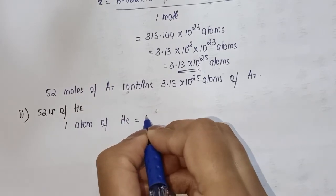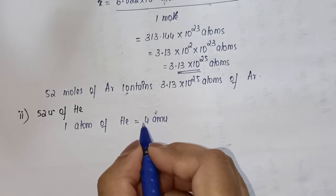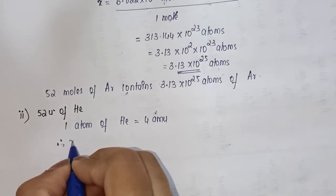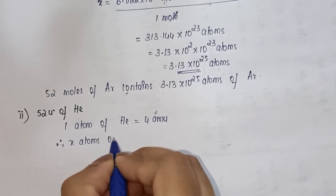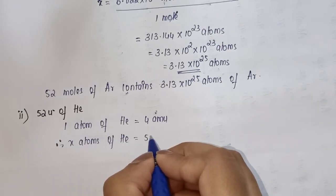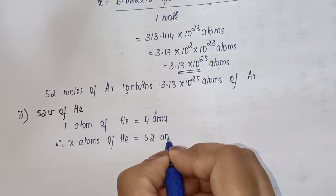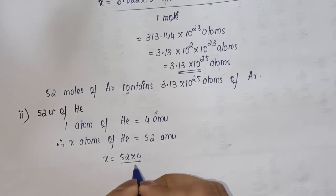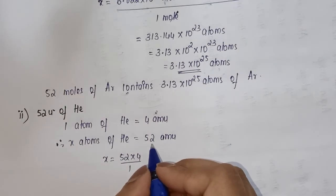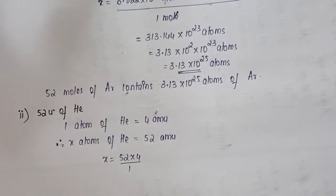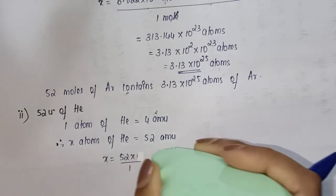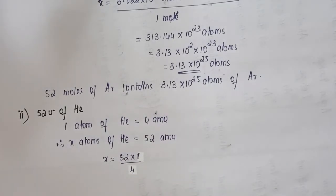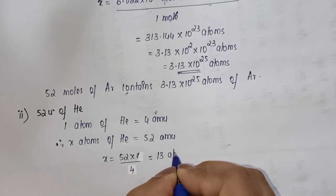One atom of helium equals 4 atomic mass units — this 4 comes from the atomic mass of helium. So how many atoms of helium are required for 52 amu? Cross multiply: x = 52 × 1 divided by 4, which gives x = 13 atoms.